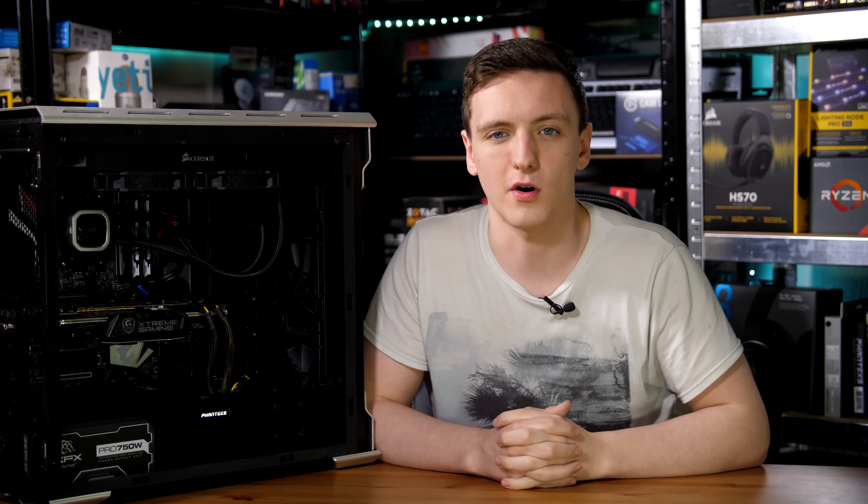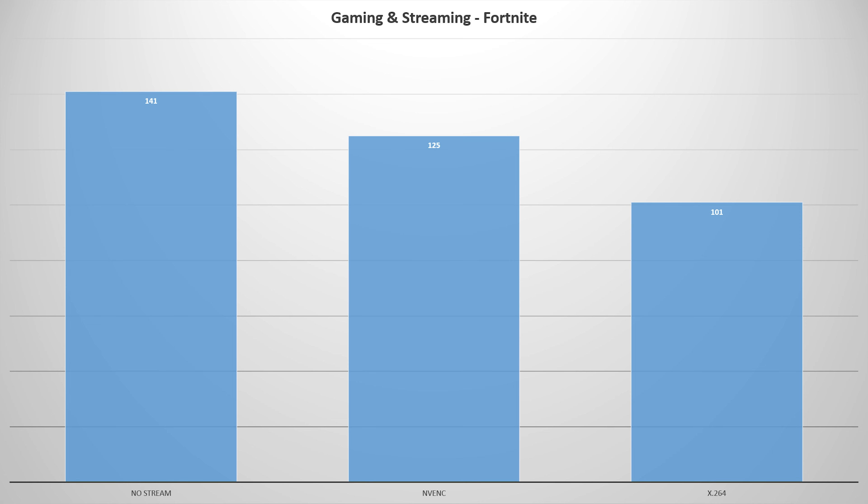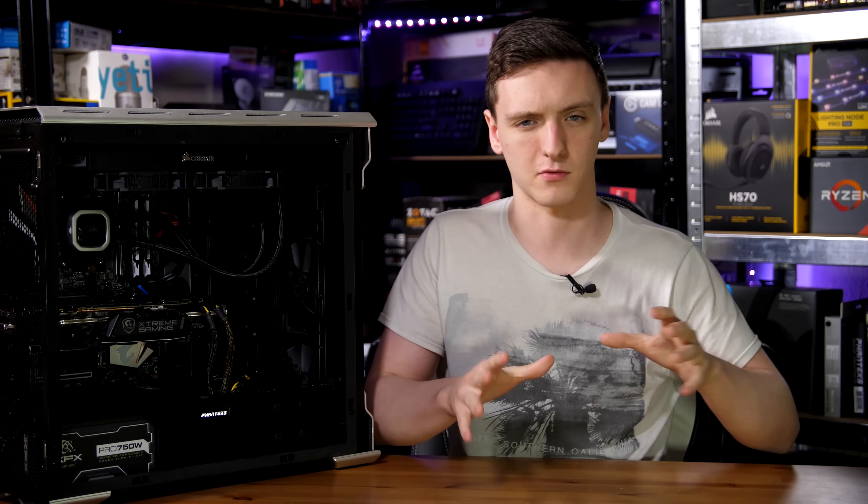In terms of FPS and the gameplay experience for you the streamer, this is a fairly big difference. With Fortnite on epic settings, it was running at 140 FPS with no streaming; with the GPU encoder streaming to Twitch and recording locally, around 120 FPS; and with the CPU x264 encoder doing both streaming and recording, around 100 FPS — a relatively big difference, and you're literally halfway in between when using the graphics card.